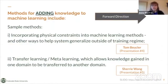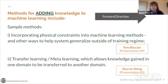Looking at sample methods for adding knowledge to machine learning — what we call the forward direction — some sample methods include incorporating physical constraints into machine learning methods and other ways to help the system generalize outside of the training range. You will see Tom Buechler talking about this in presentation number four today. Another method is to use transfer learning or meta-learning, which allows knowledge gained in one domain to be transferred to another domain, and you will see Sherry Wong touching on this topic.